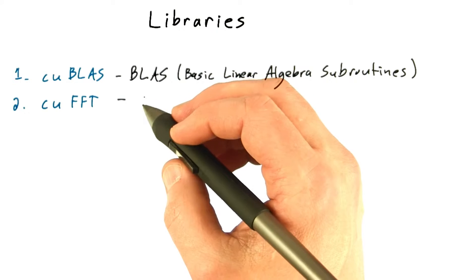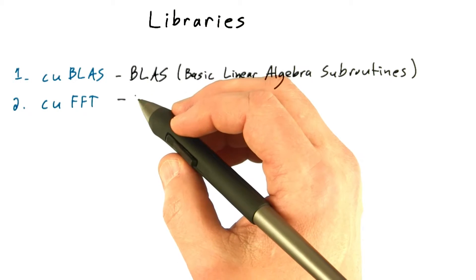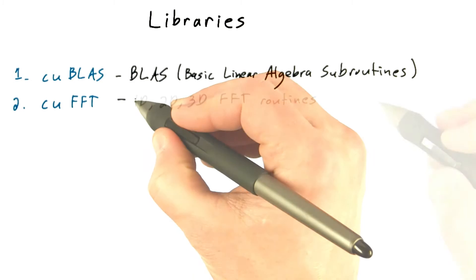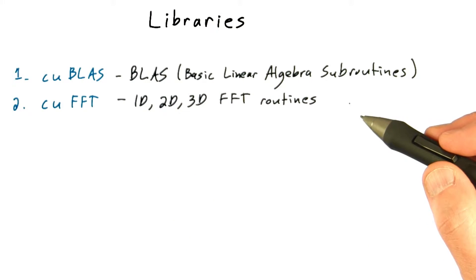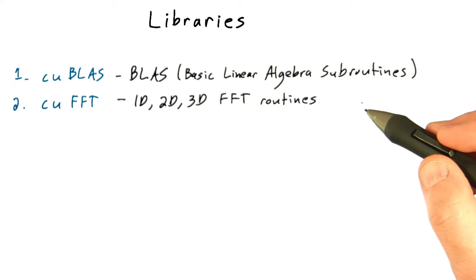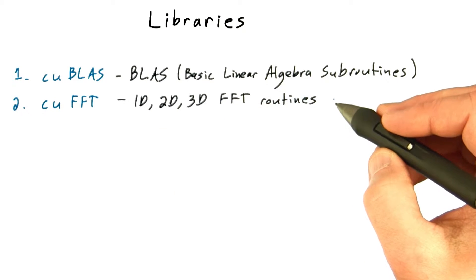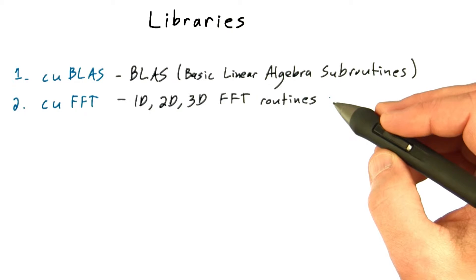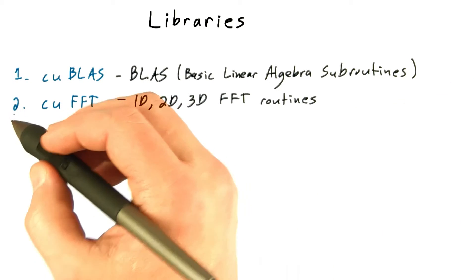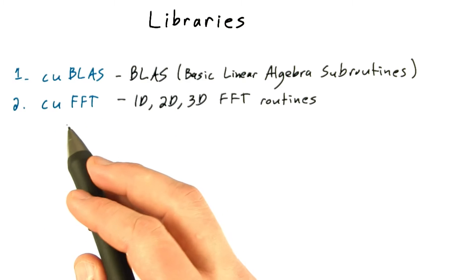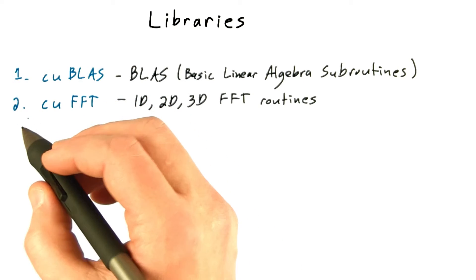Next is CUFFT. FFT stands for Fast Fourier Transform, so not surprisingly, this is the CUDA Fast Fourier Transform. This includes various batched transforms as well as support for real-to-complex and complex-to-complex FFTs, and so forth. It has an interface similar in ways to FFTW, the popular Fast Fourier Transform in the West routine, so it's a familiar interface to anybody who uses FFTs as part of their bread-and-butter toolbox.